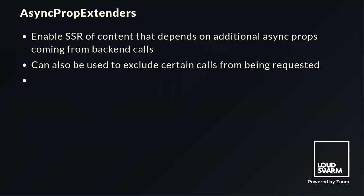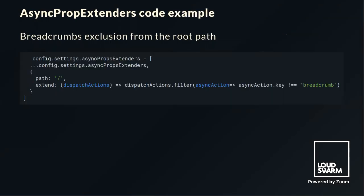In a code example, we register for the getContent action a custom endpoint named res.endpoint. When configured, the Volto site will be called with ?expand=our.rest.endpoint, meaning the content response will also include the response from this endpoint. For async props extenders — this feature enables server-side rendering of content that depends on additional props from backend calls. It can also exclude certain API calls from being requested. For instance, from the root path we can exclude the breadcrumb action from dispatching, so the root page loads without a breadcrumb.